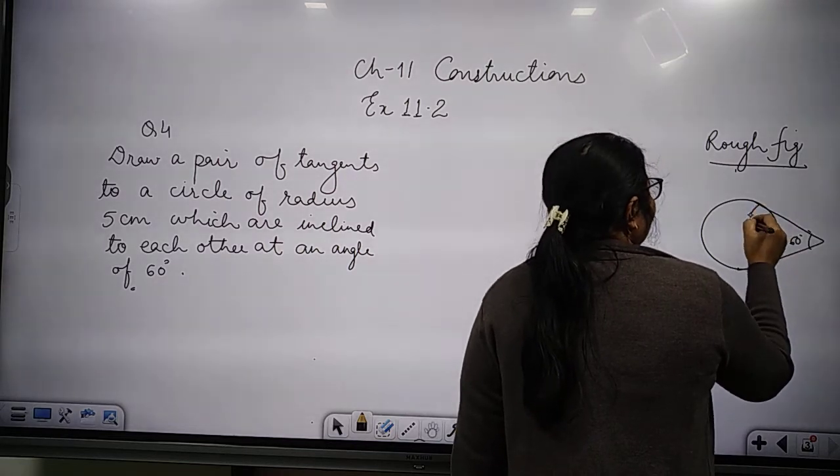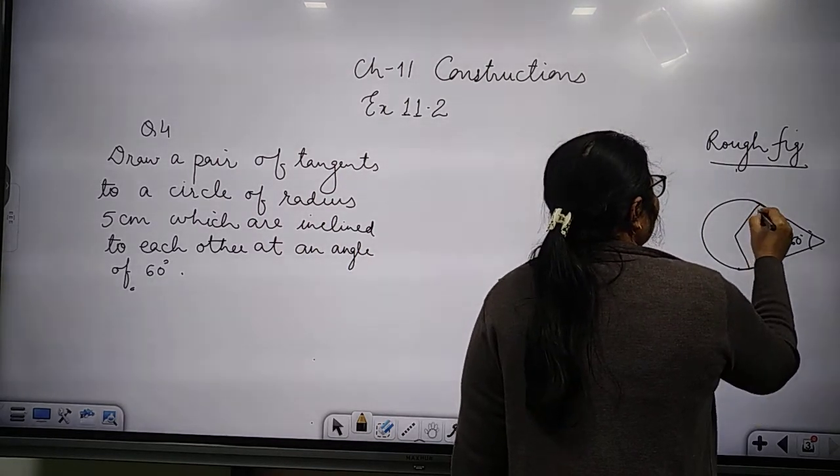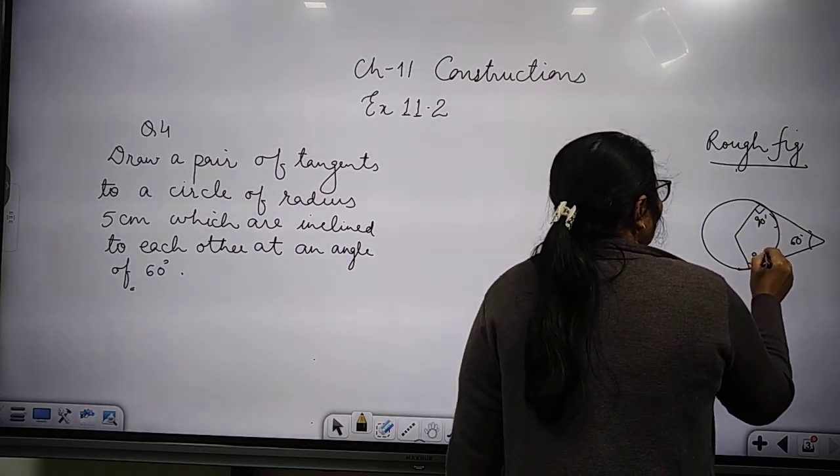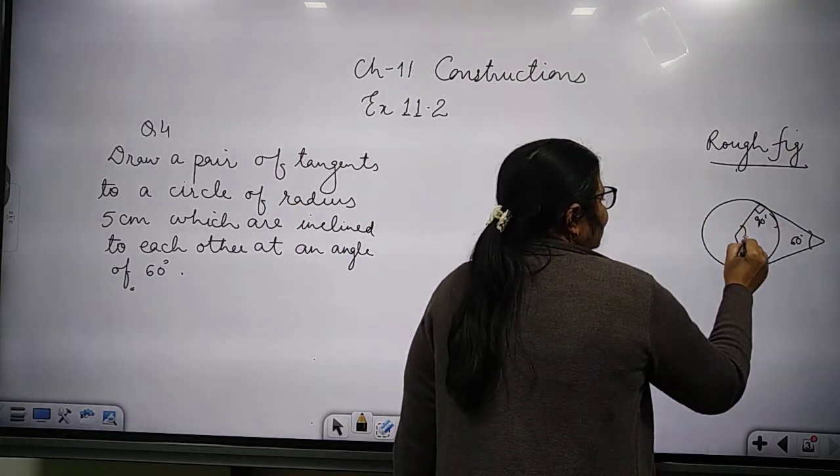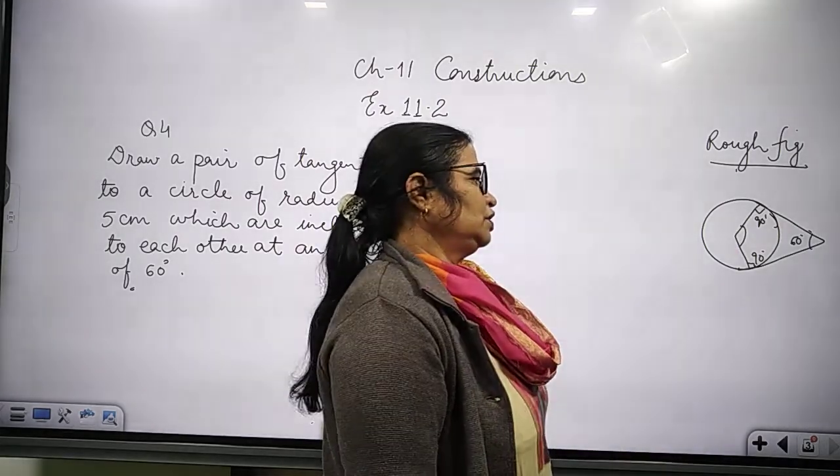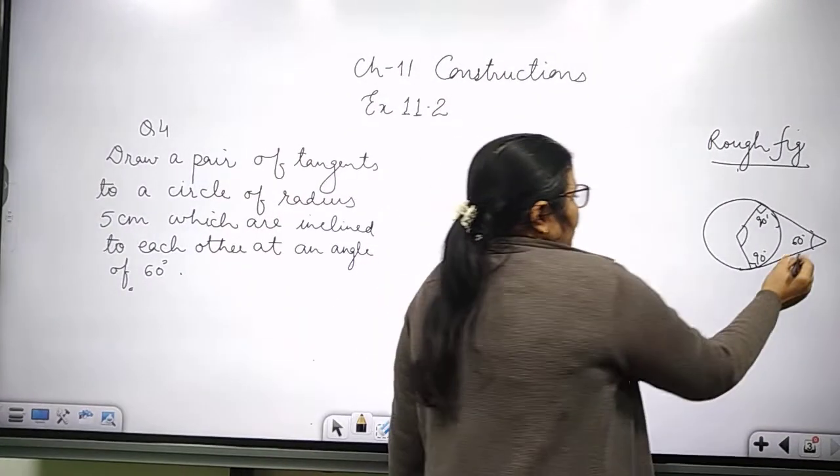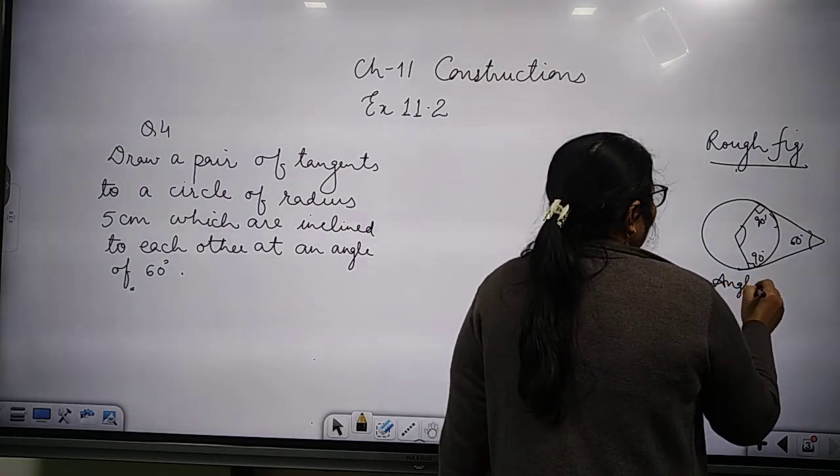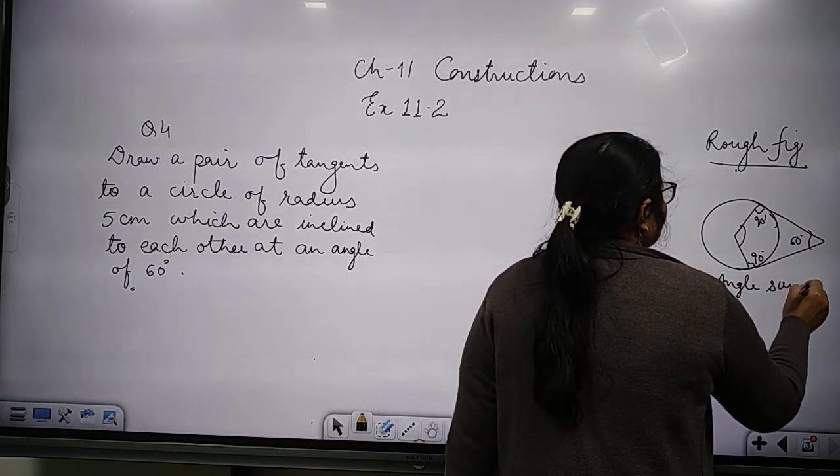These are the tangents. They are always inclined at an angle of 90 degrees, right? So what angle is left here? If we see the angle sum property of quadrilaterals,